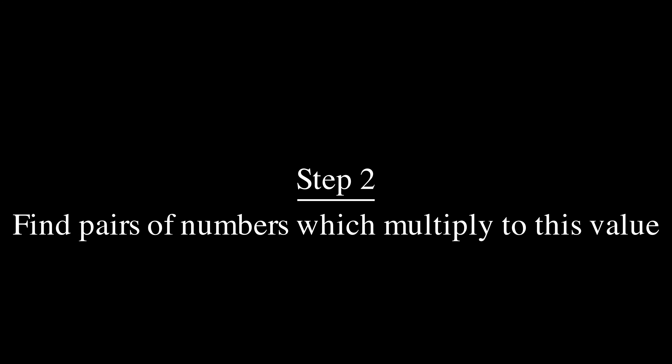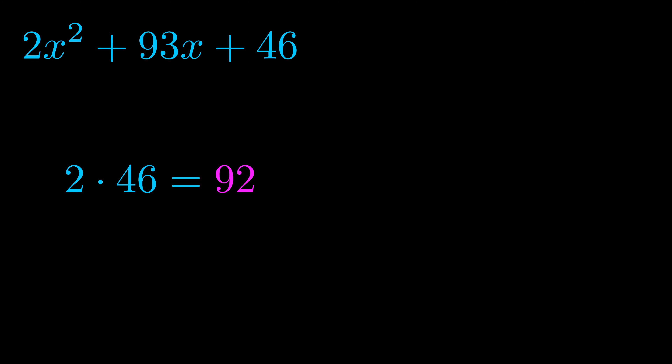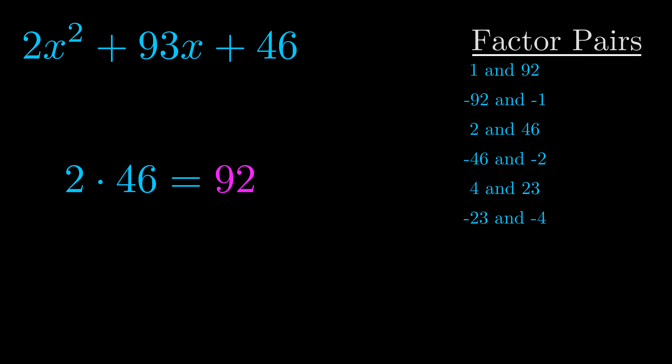In this video we're going to learn how to factor this equation. Step one when factoring an equation of this form is to multiply the a value by the c value. The a value is the coefficient on the x squared term and the c value is the constant term. When we multiply these two values we get this value here in magenta.